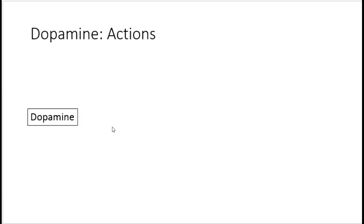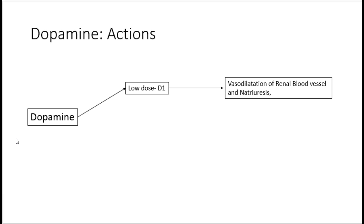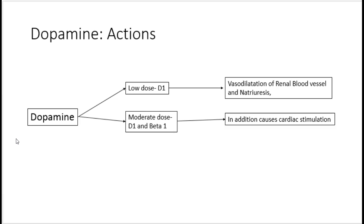Now let's move on to dopamine. The actions of dopamine are unique and depend on three dose ranges. At low dose, the predominant action is on D1 receptors, leading to vasodilatation of renal blood vessels and induction of natriuresis, thereby maintaining renal blood flow to the kidney. At moderate dose, beta 1 action is added alongside D1, resulting in cardiac stimulation in addition to the renal effects.